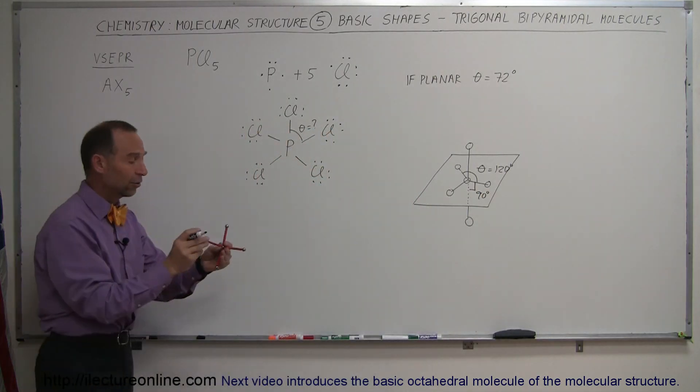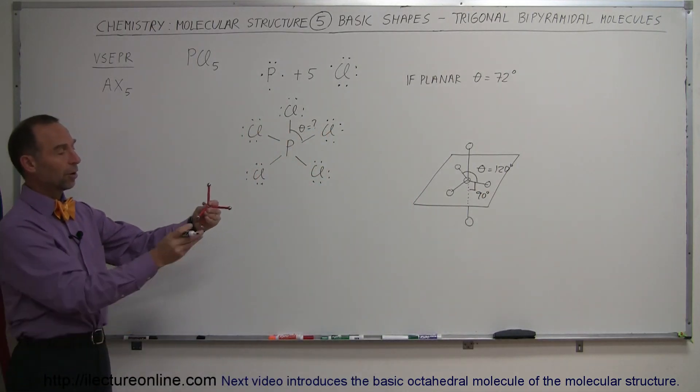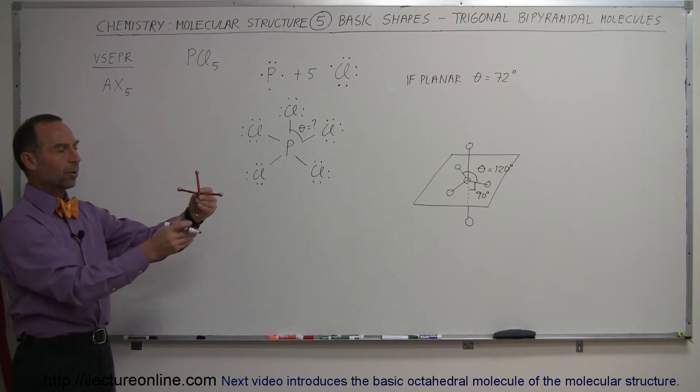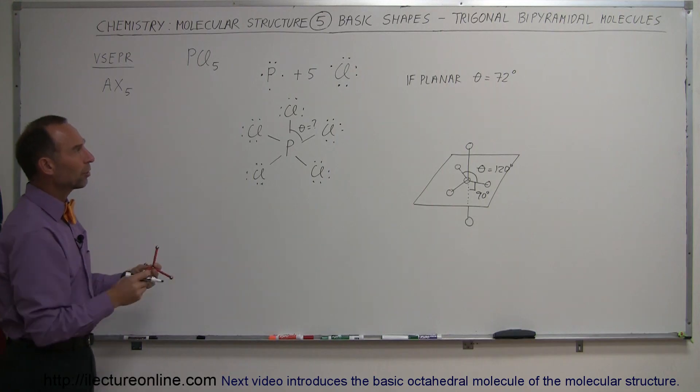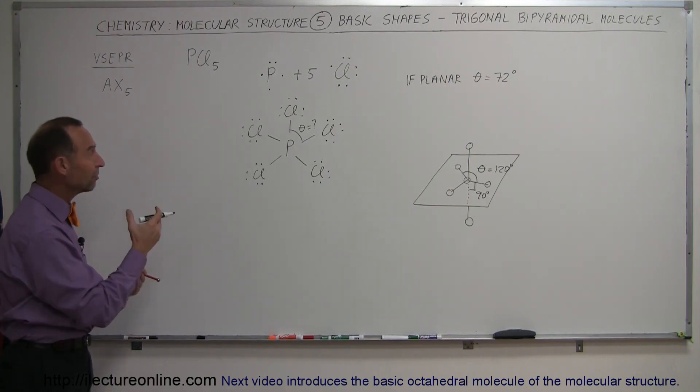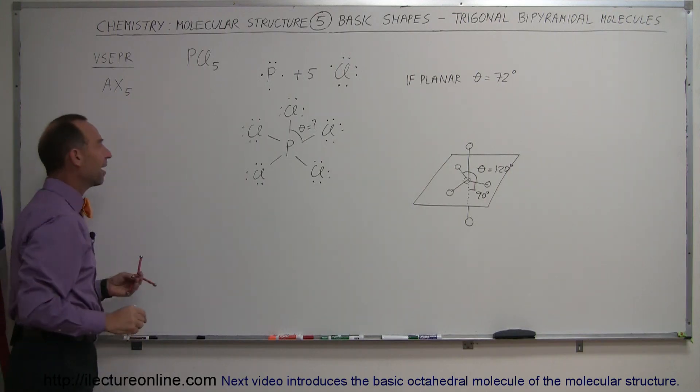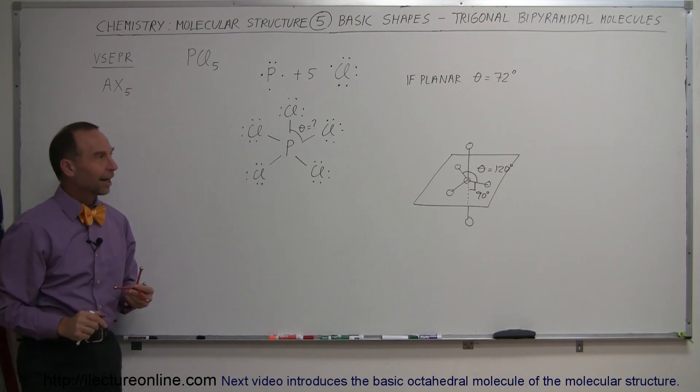And so you end up with a molecule that ends up looking like this. Three molecules like this in a plane, one straight up, one straight down, and that's what we call the trigonal bipyramidal molecule. So that's the basic shape in the case that you end up with one central molecule and five terminal molecules at the end like that.